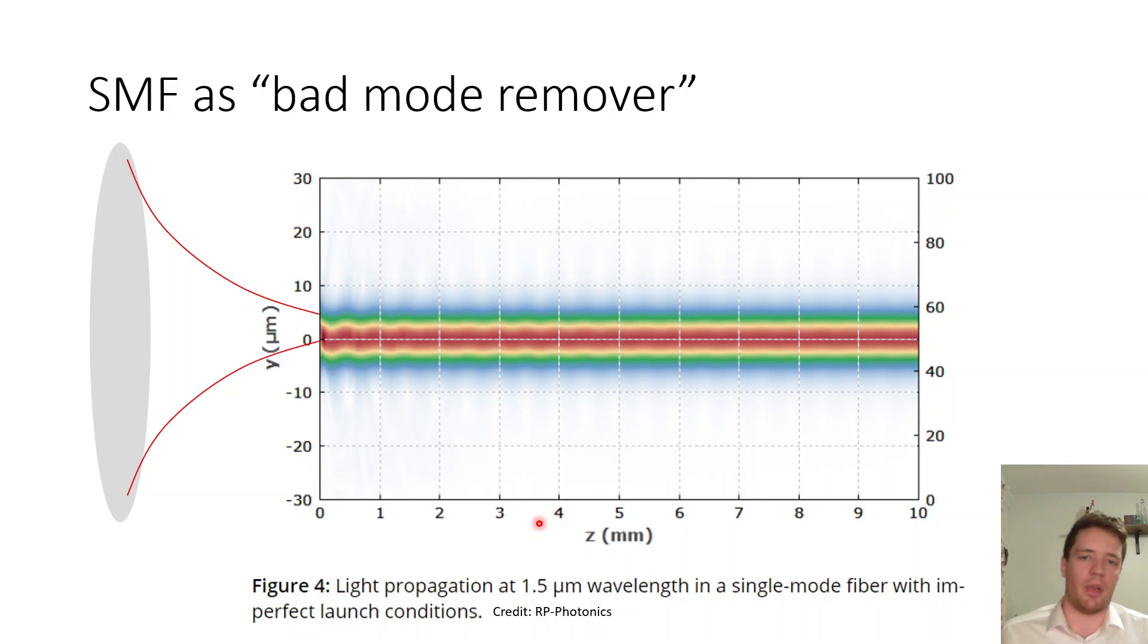So in some way you can think about a single mode fiber as like a bad mode remover. For example in this diagram here that I borrowed from RP Photonics light is being launched into a single mode fiber at a slight misalignment with the core so it means that we both excite the fundamental mode but also some high order mode I think it's going to be a cladding mode in this case that extends very far beyond the core and you can see as we move forward the cladding mode basically decays and becomes negligible, it has a lot of loss but in the end we get just the pure single mode fiber behavior coming out without any speckling pattern.